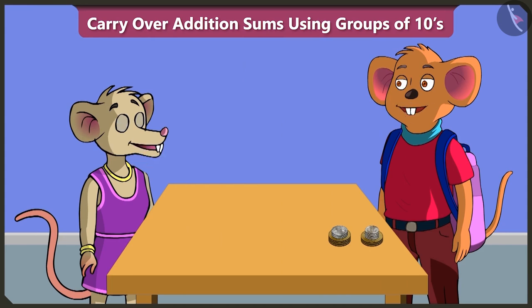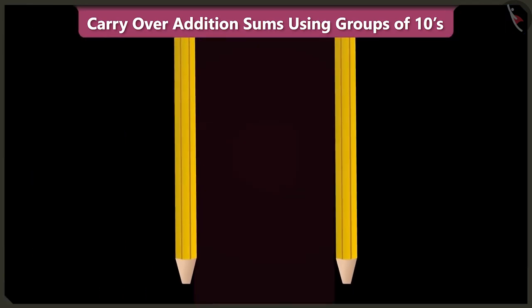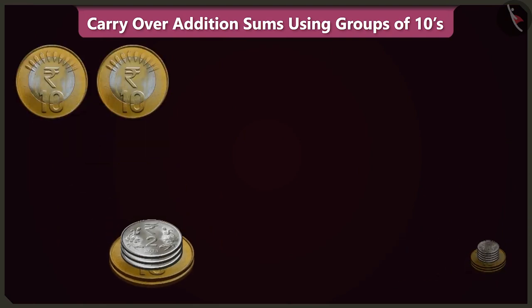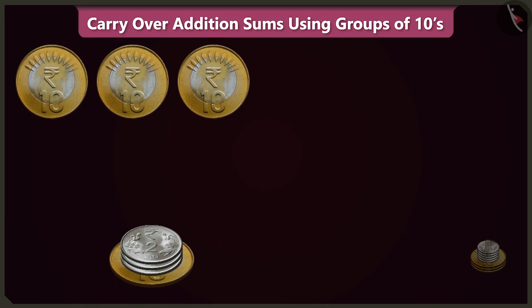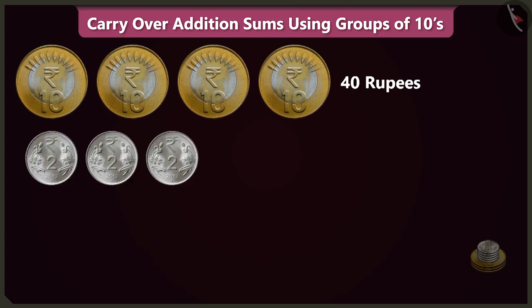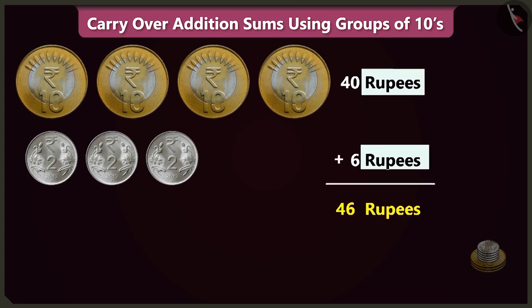Hey Chi Chi, help me count these coins! Sure, Choo Choo. In this pile of coins there are 1, 2, 3, and 4 coins of 10 rupees, which is 40 rupees, and 3 coins of 2 rupees, that is 6 rupees. So 40 and 6 — there are 46 rupees in this pile.